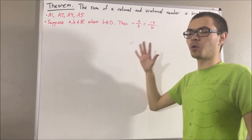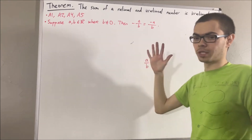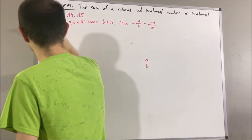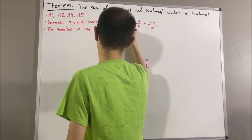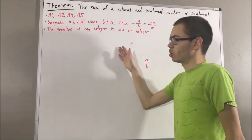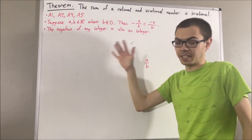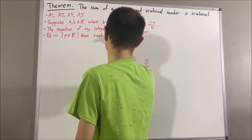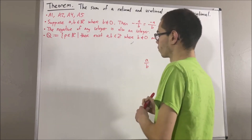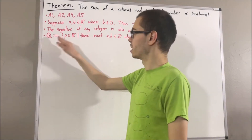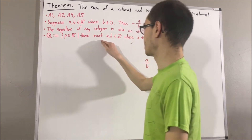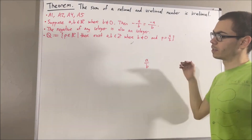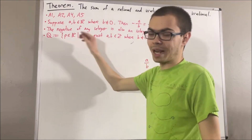In our real number system, we have defined the integers as a subset of the real numbers, and we have proven that the negative of any integer is also an integer. From the integers, we defined the set of rational numbers as a subset of the real numbers: the set of real numbers p such that there exist integers a and b, where b is non-zero, and p is equal to a over b. We have also proven that the sum of two rational numbers is a rational number.